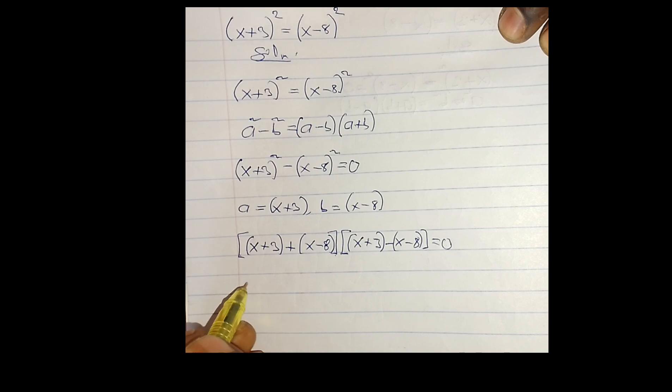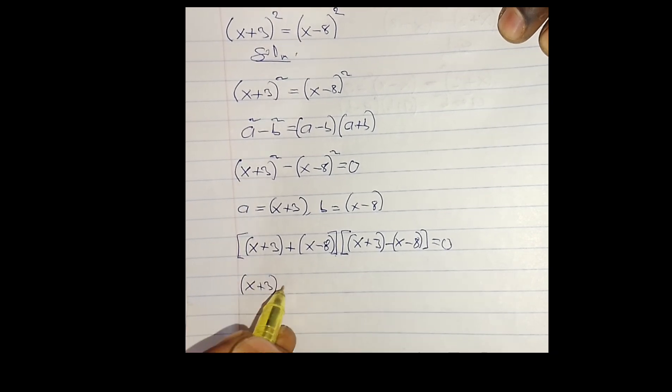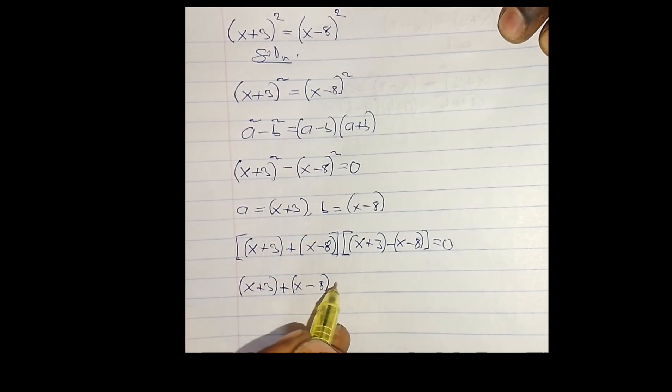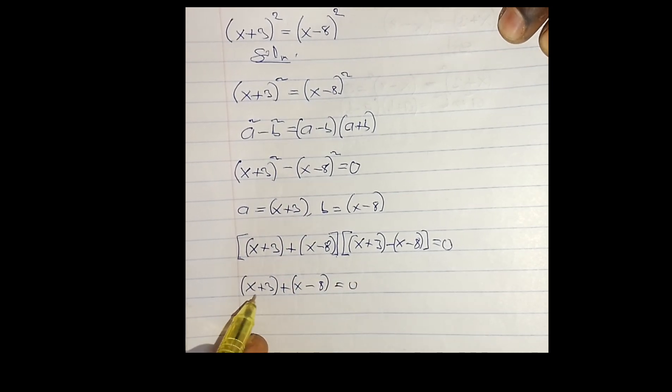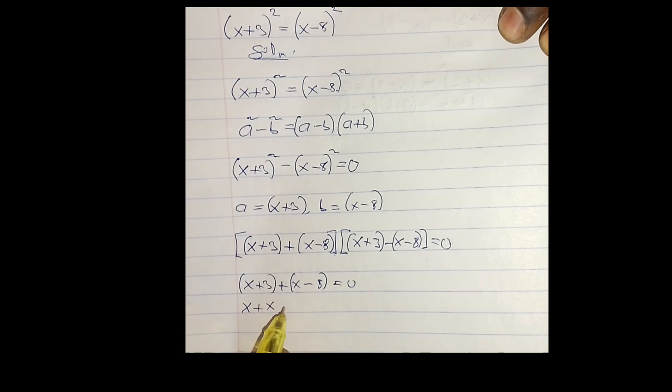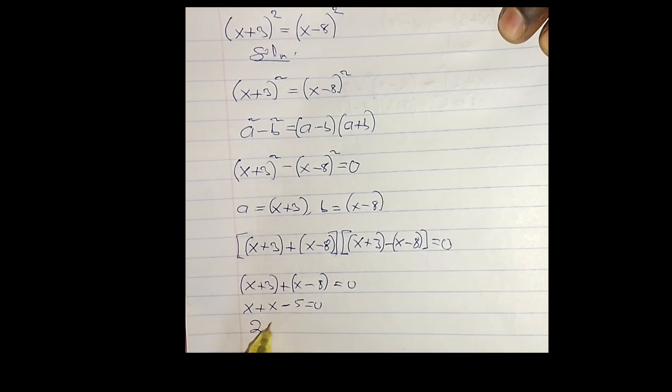So let me take the first bracket, which is (x + 3) + (x - 8) = 0. So when I rearrange, I'm going to have x + x plus 3 minus 8. That means 2x - 5 = 0, so 2x = 5.